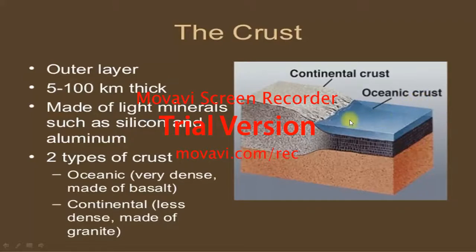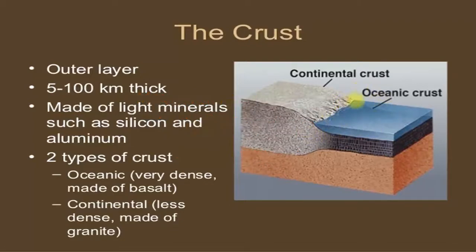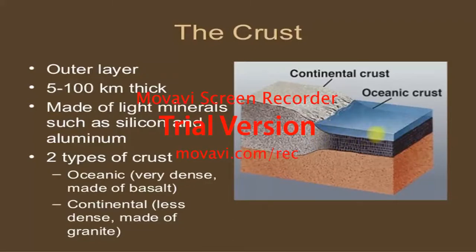The crust is divided into continental crust and oceanic crust. Continental crust is less dense, while oceanic crust is more dense. The continental crust forms the land areas, and the oceanic crust forms the ocean floor.